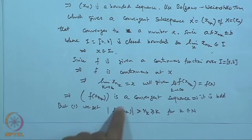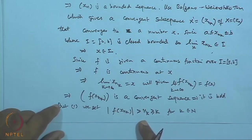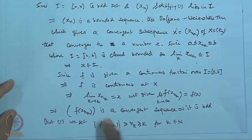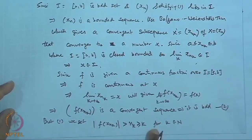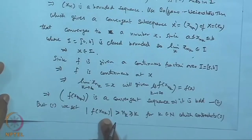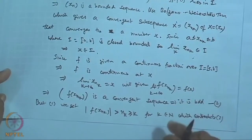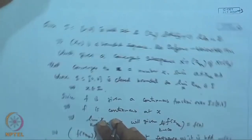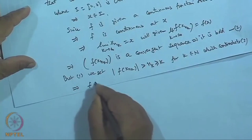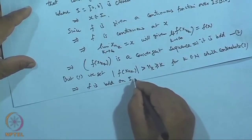This contradiction arises from our assumption that f is not bounded on I. Therefore, f is bounded on I — that is, on the closed interval. This proves the Boundedness Theorem.